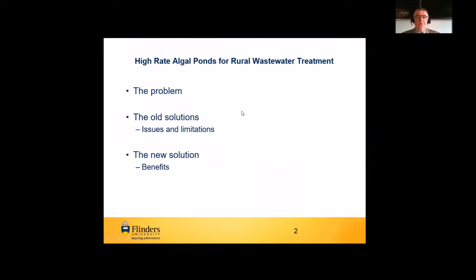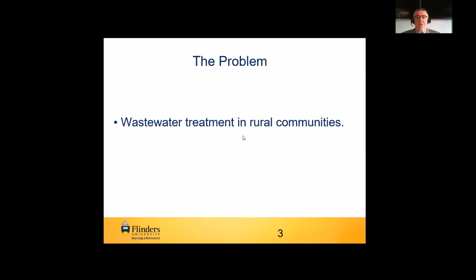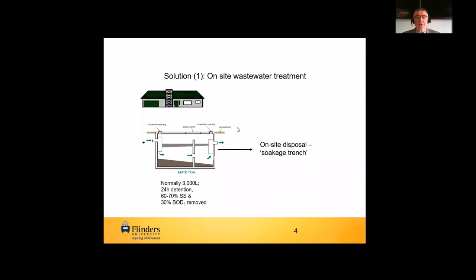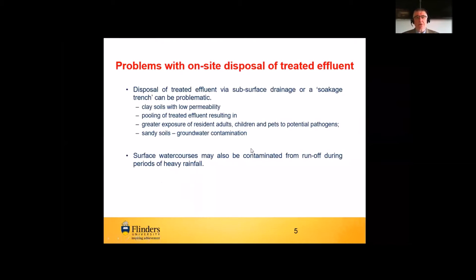I'm going to take you through the problem of rural wastewater treatment, the old solutions and their issues and limitations, and then the new solution looking at benefits. The problem is that we've got rural communities not really supported by wastewater treatment infrastructure or major utilities. The traditional route has been on-site wastewater treatment — for example, a septic tank receiving all laundry, bathroom, and toilet waste. In South Australia it's a fairly standard design of a 3,000-litre volume with 24-hour detention, giving the benefit of suspended solids removal and BOD removal. Ultimately you have to dispose of the liquid phase, traditionally via a soakage trench or channel into the backyard or garden.